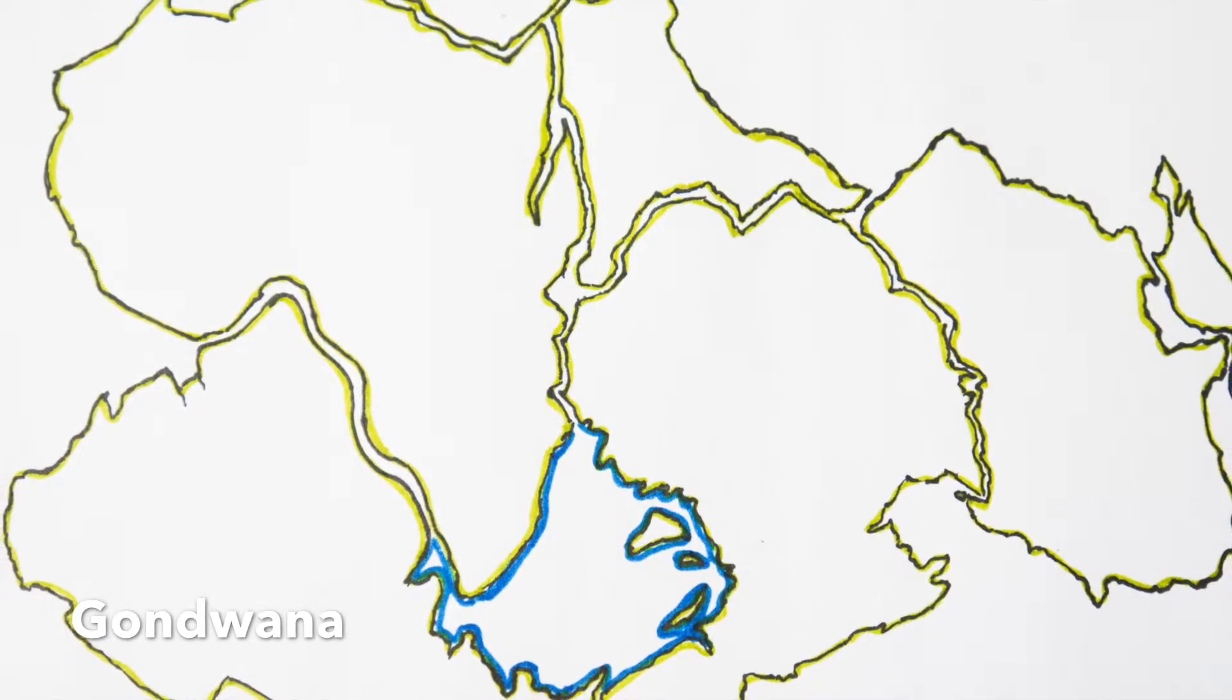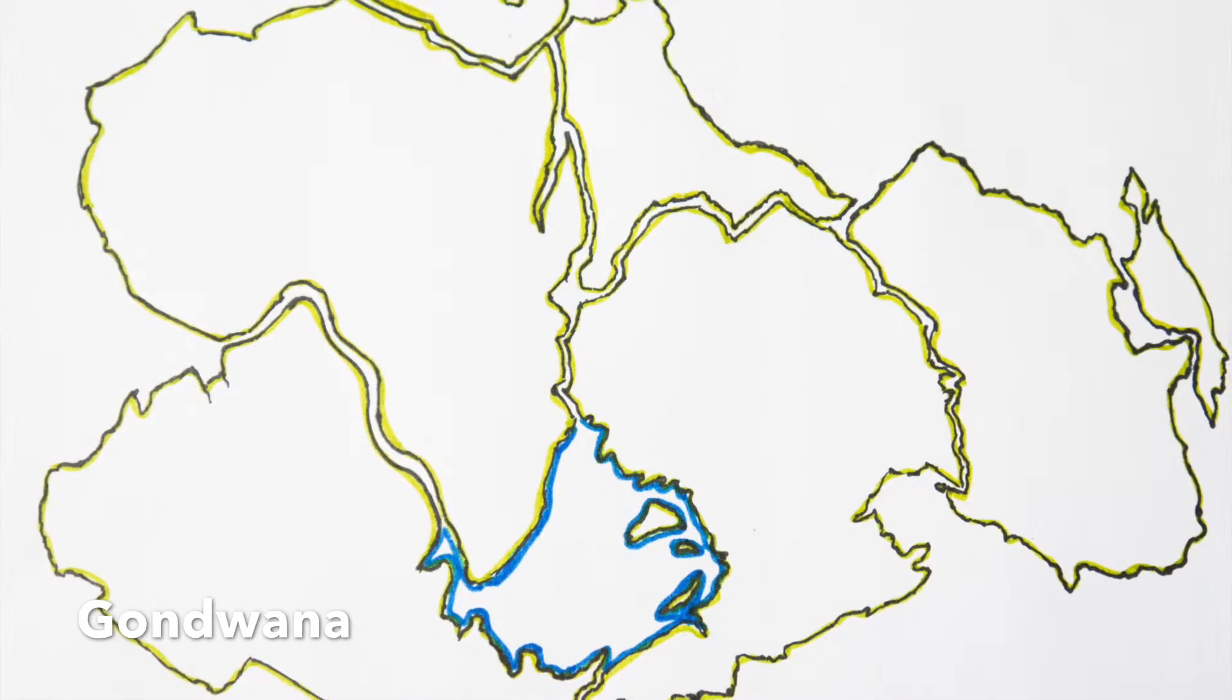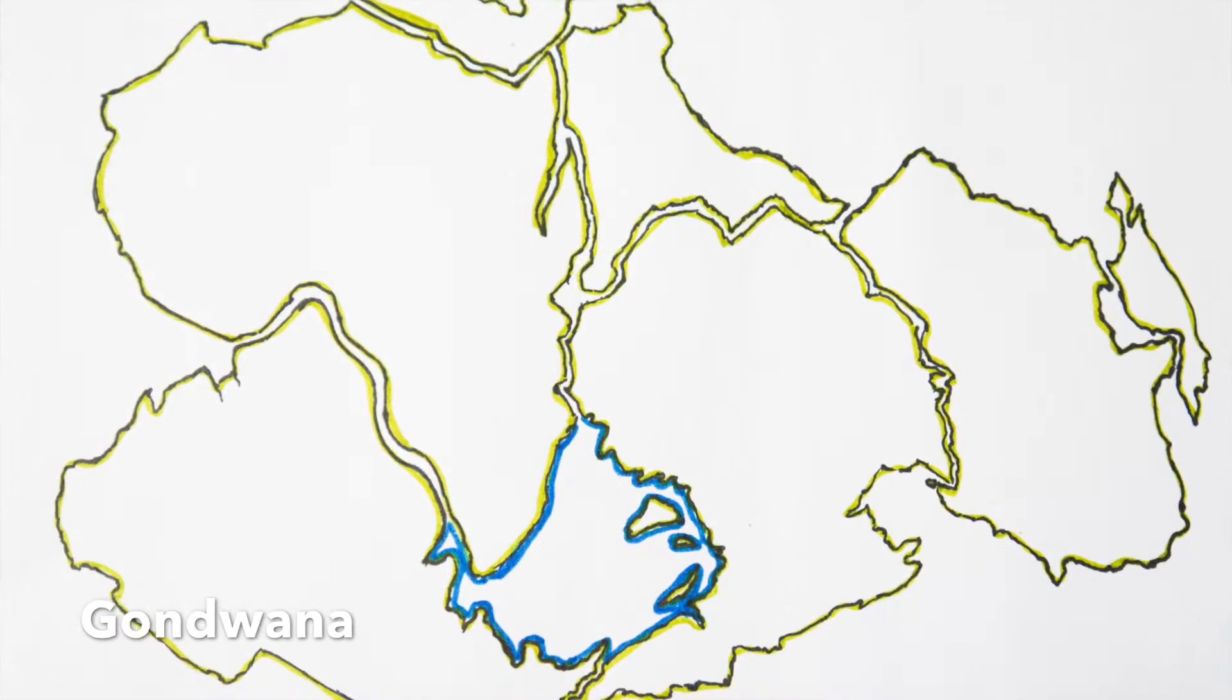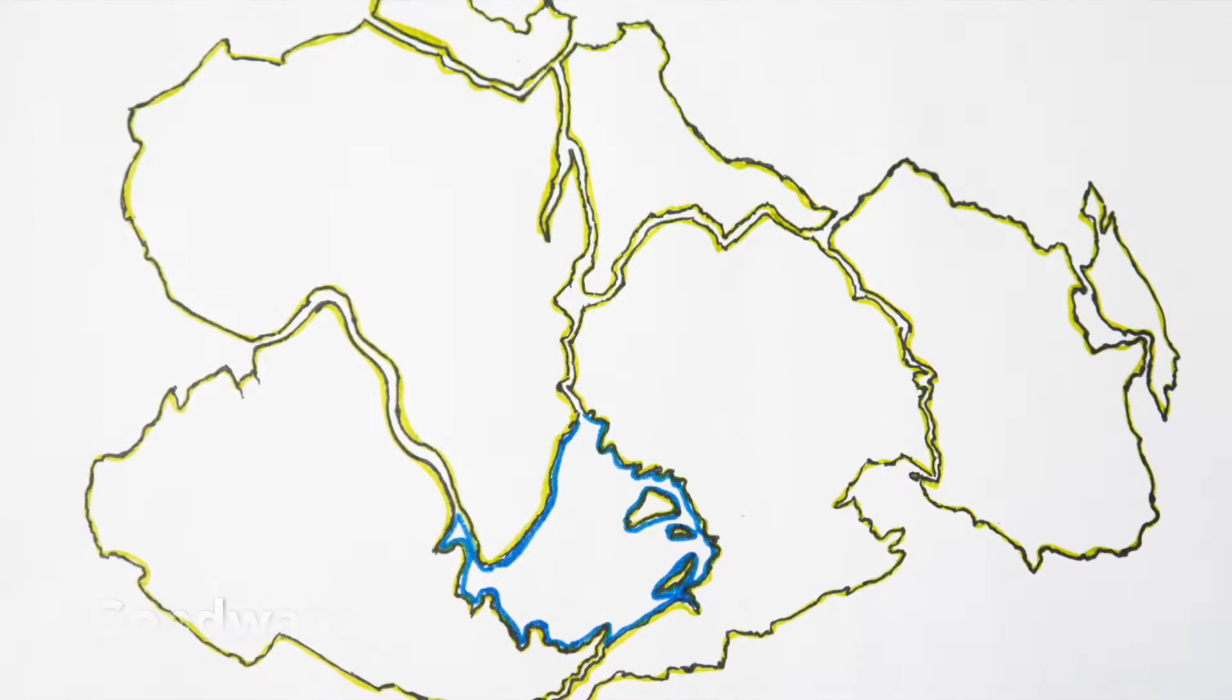600 million years ago, this is what the world looked like as Gondwana land. Through tectonic processes and periods of orogeny and sedimentation, New Zealand has evolved from this landmass.